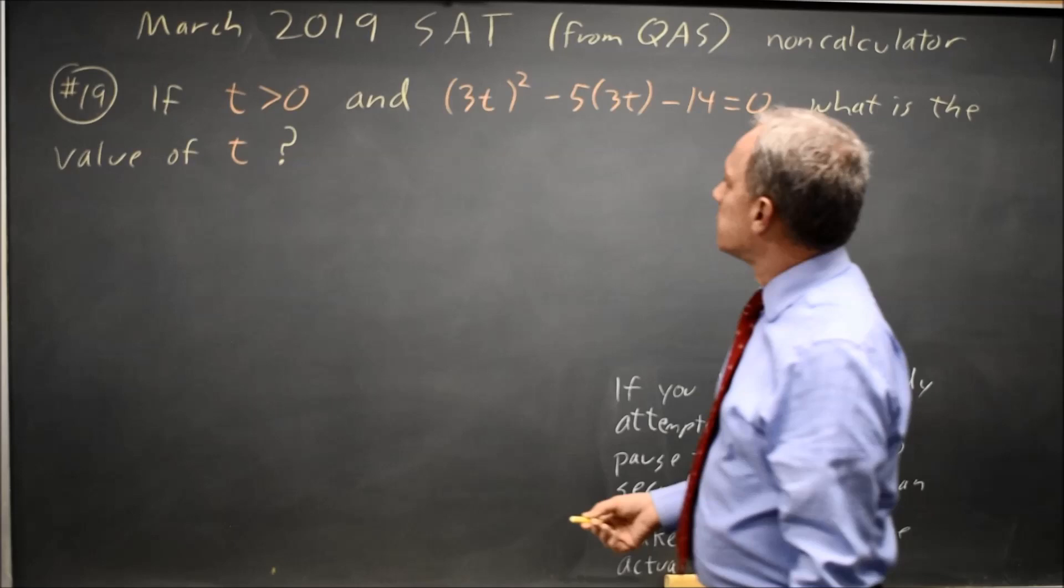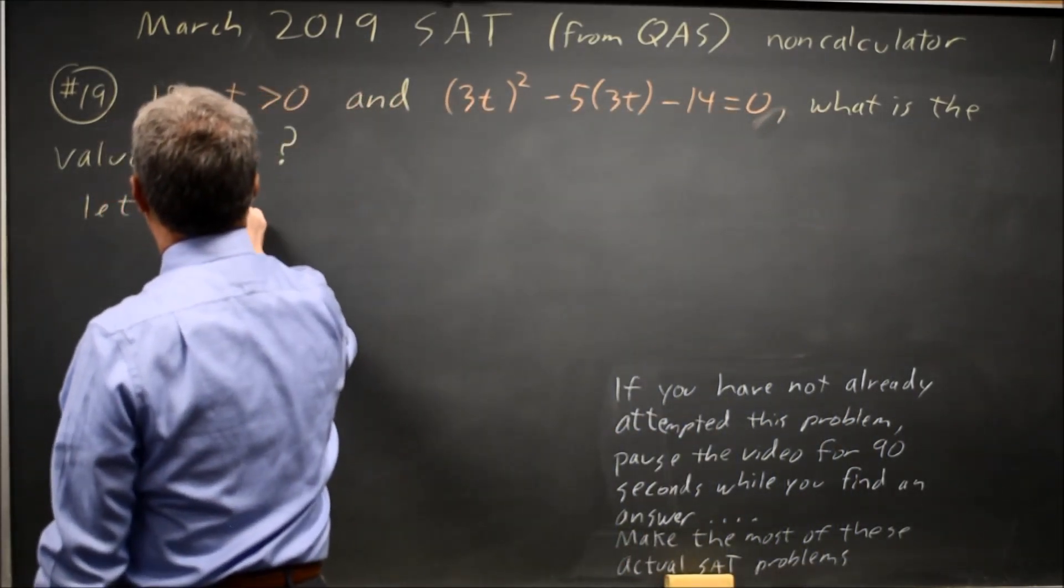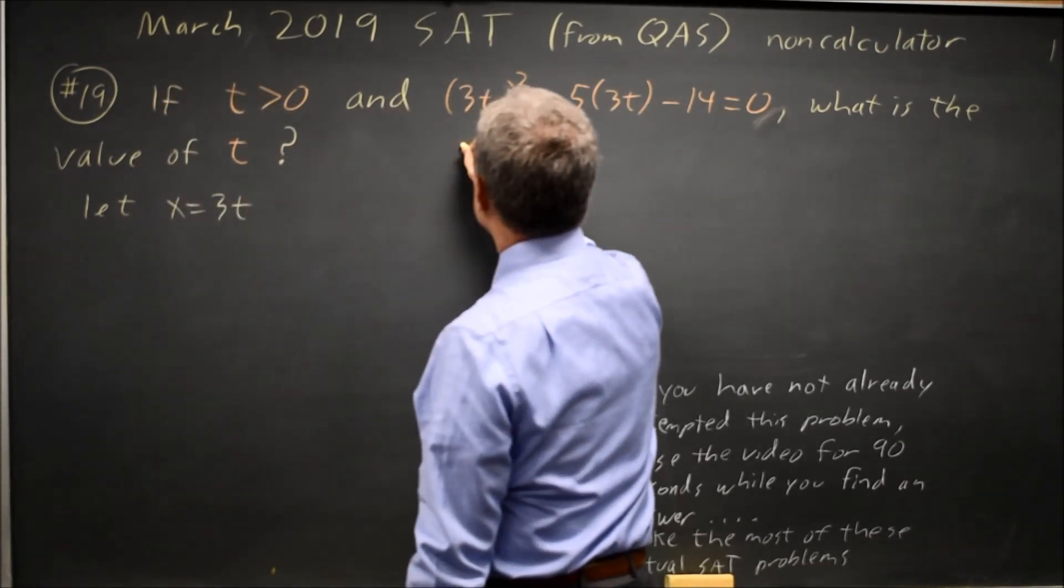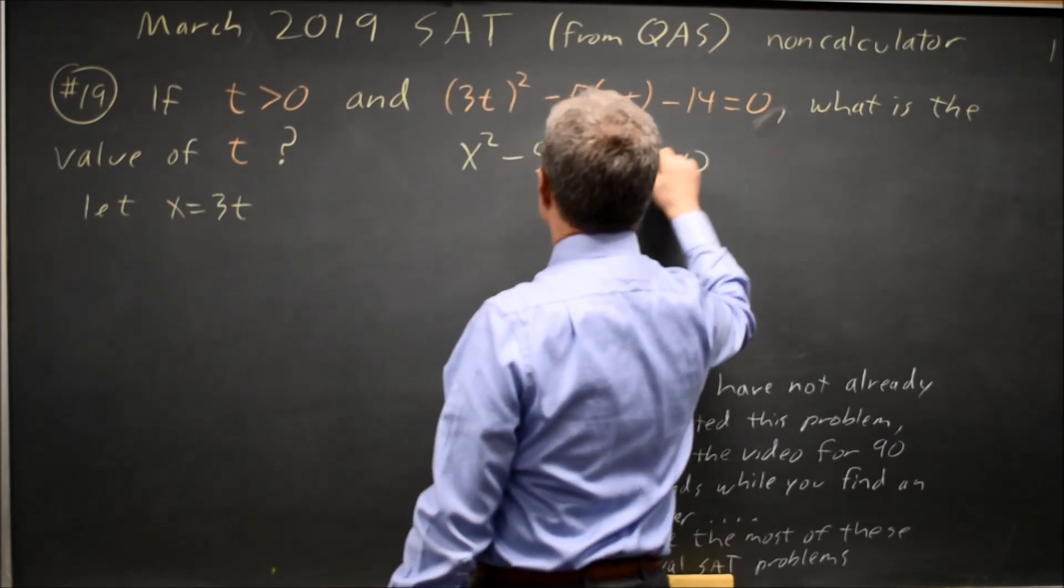An easier option is let's substitute x equal 3t. So this is x squared minus 5x minus 14 equals 0.